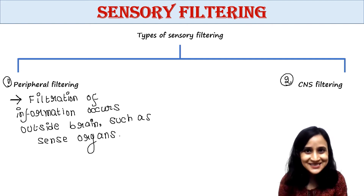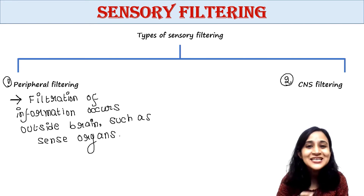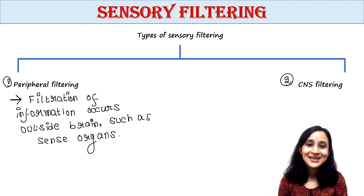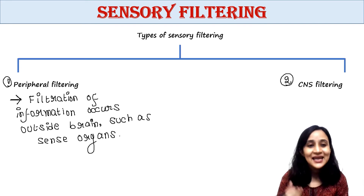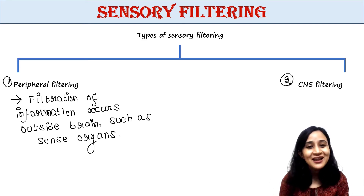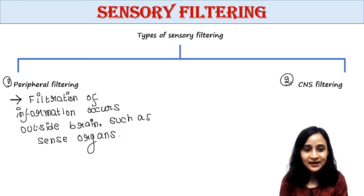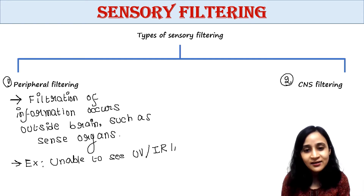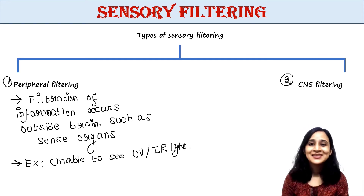A good example of peripheral filtering: could you ever see ultraviolet or infrared light? No, because our eyes filter it out — we are simply not capable of seeing UV or infrared light. So one example of peripheral filtering is being unable to see UV or infrared light.